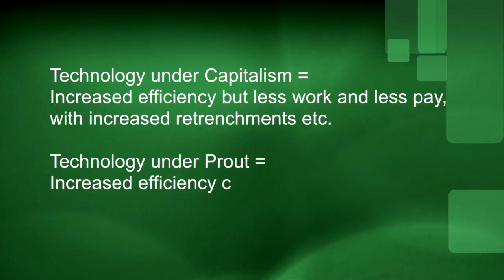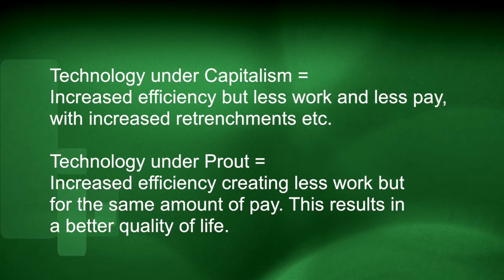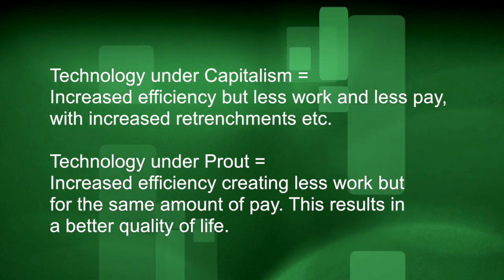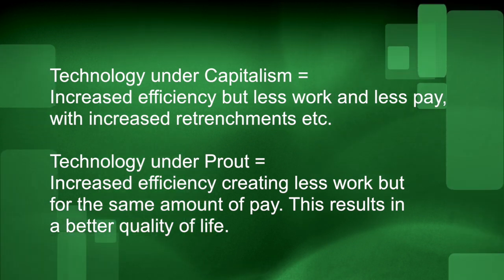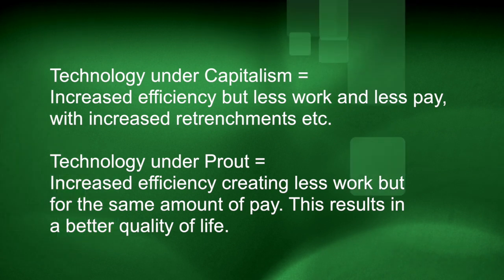Prout fully supports the use of science and technology, but this should never be at the detriment of the environment. According to Prout, plants and animals also have their right to existence. Science should be used to ensure a better environment and a better quality of life for all. Science and technology should never be used just to create wealth for a few or for mass destruction such as in warfare. It should be noted that under capitalism, less work due to the advances of technology means less pay, if not retrenchment. However, under Prout, it means less work for the same amount of pay. This fosters a much richer, happier and more meaningful society.